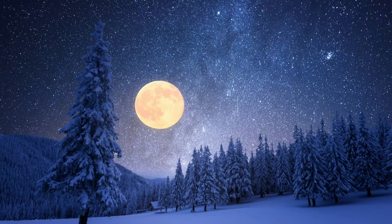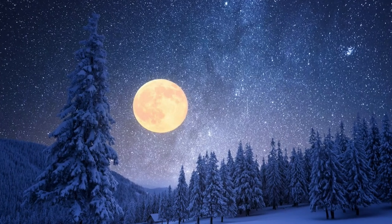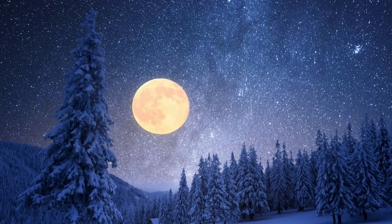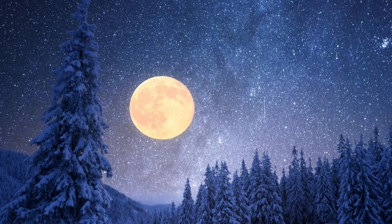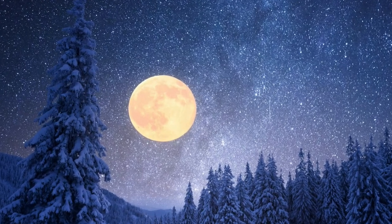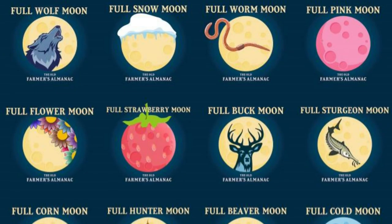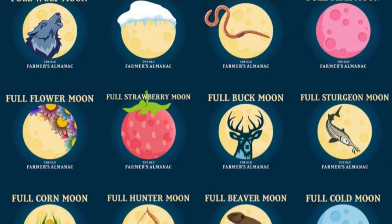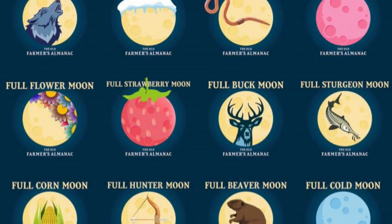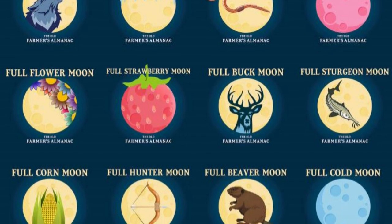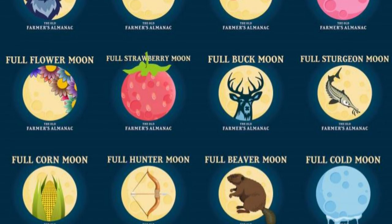Since the beginning of time, people have studied the moon in awe and wonder. Many Native American tribes use the moon as their calendar. Using this calendar, each full moon was given a name and used to mark the beginning of a new month. These 12 moons helped Native Americans know when to plant, when to harvest, and so much more.